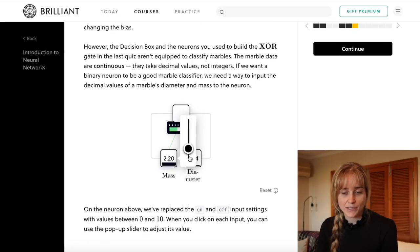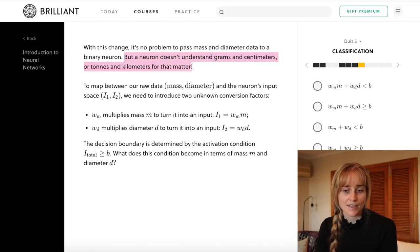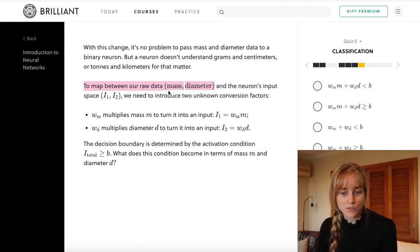Our inputs range from zero to nearly 10, but it says here on the next page a neuron doesn't understand grams and centimeters or any other units for that matter. So to map between our raw data, which is mass and diameter, and the neuron's input space, which is the intensity one and intensity two, we need to introduce two unknown conversion factors.